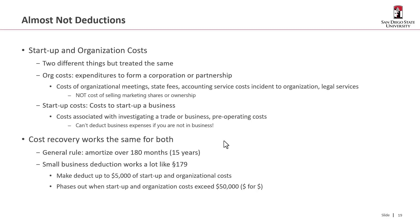Instead, what Congress has done is give you a break. The general rule is you can amortize these costs over 180 months, which is 15 years. To the extent you incur organizational costs, you can amortize them over 15 years. To the extent you incur startup costs, you can amortize those over 15 years as well.